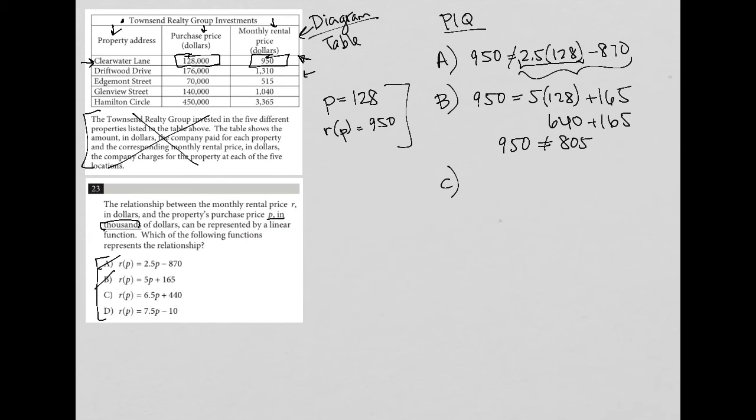So we're going to just keep on trying more answer choices. So choice C would be nine fifty is equal to six point five times one twenty eight plus four hundred and forty. So back to my calculator, six point five times one two eight. Well, that's eight hundred and thirty two. Now adding four hundred and forty to that is definitely not going to equal nine fifty. So C is gone.